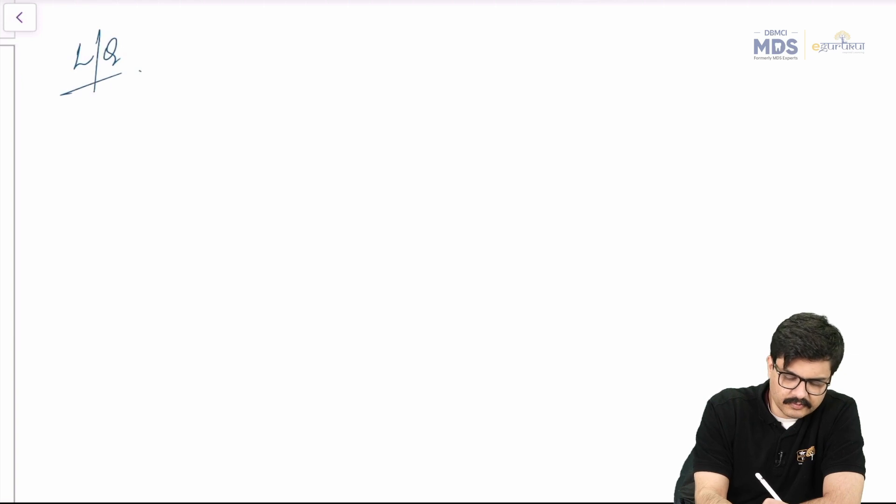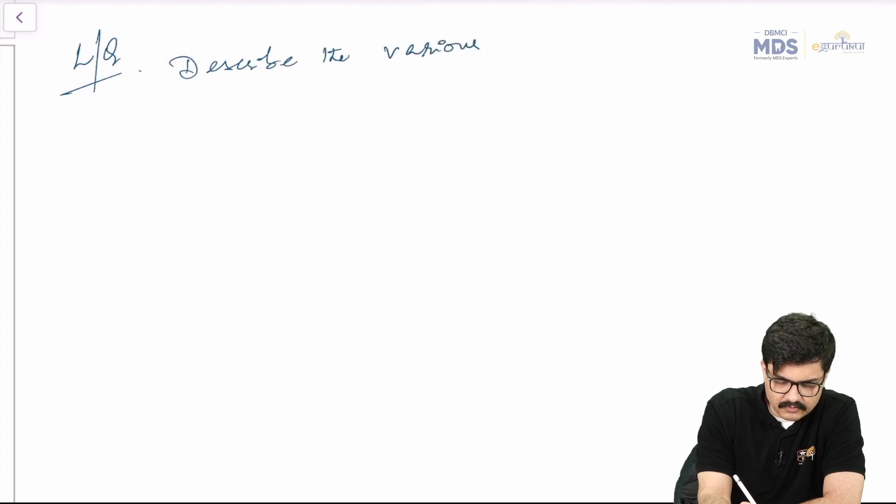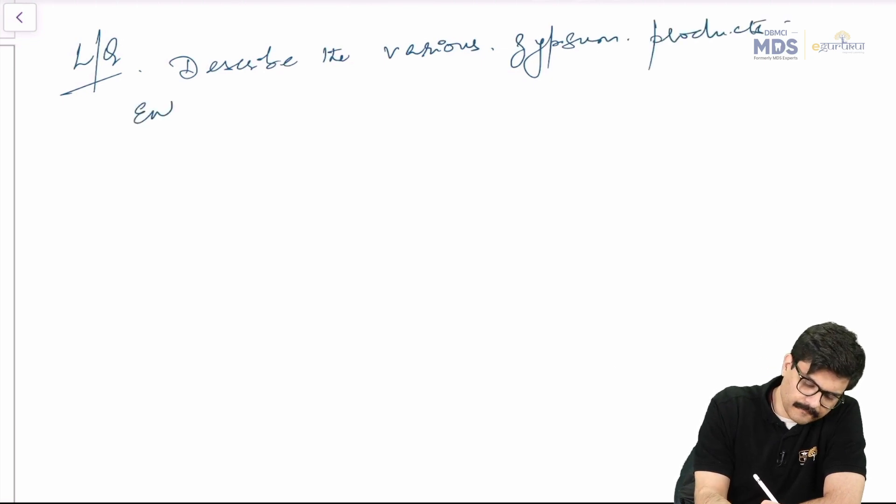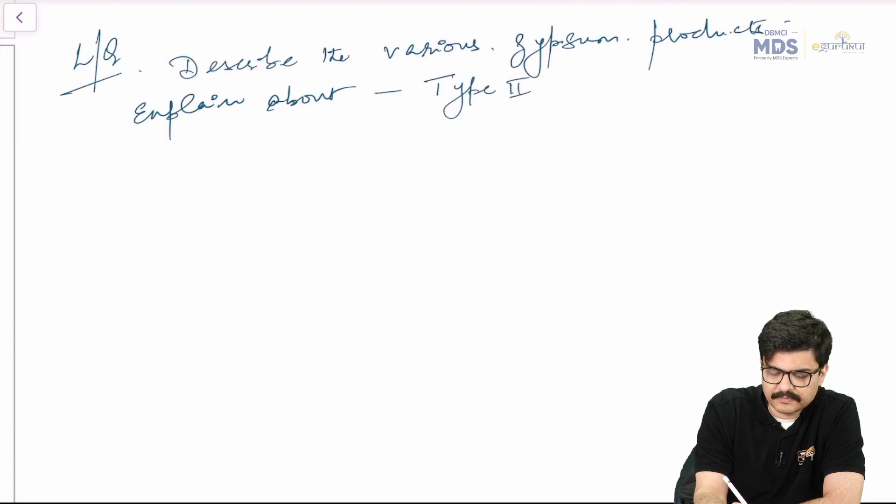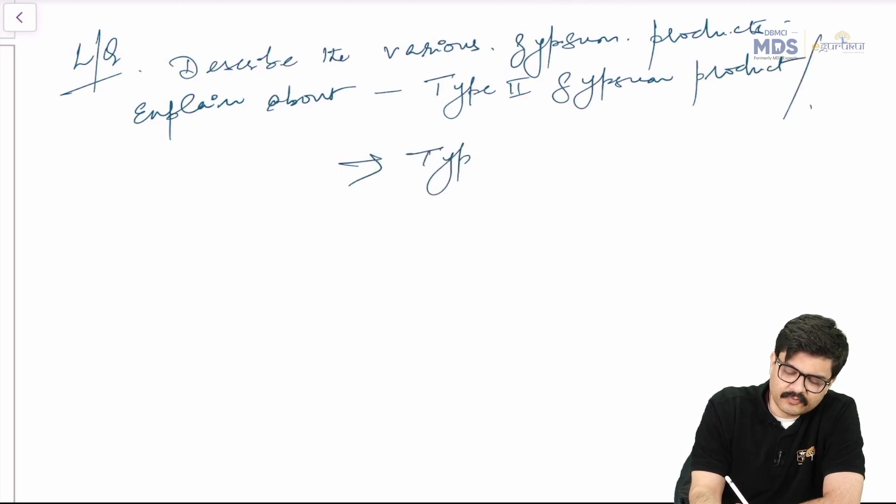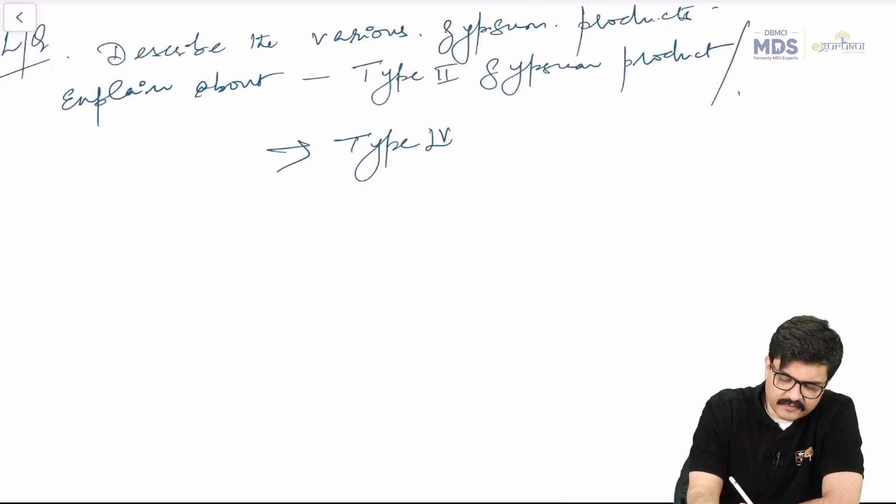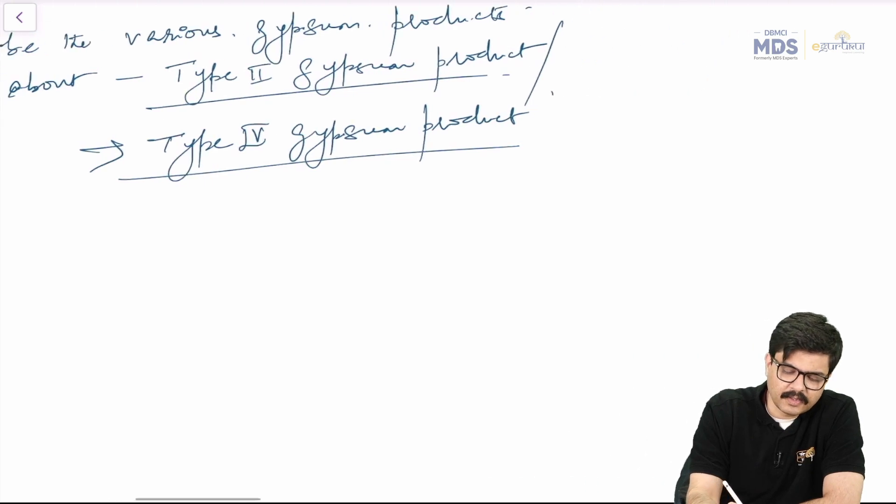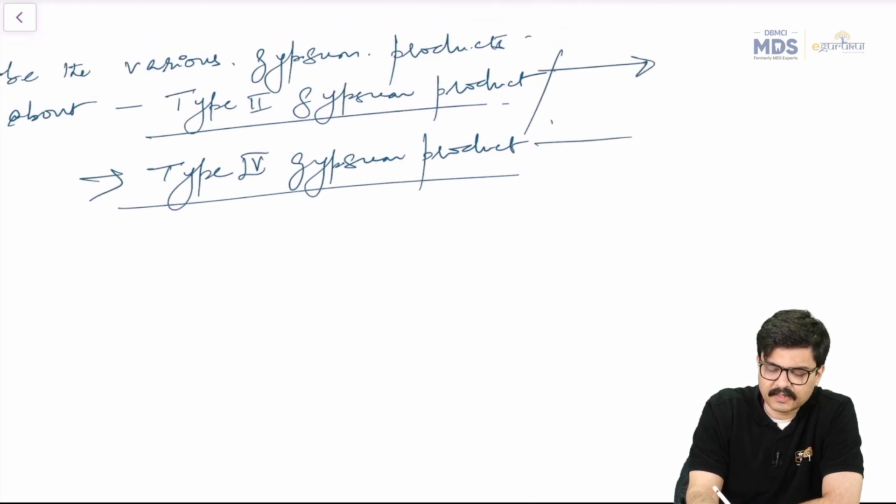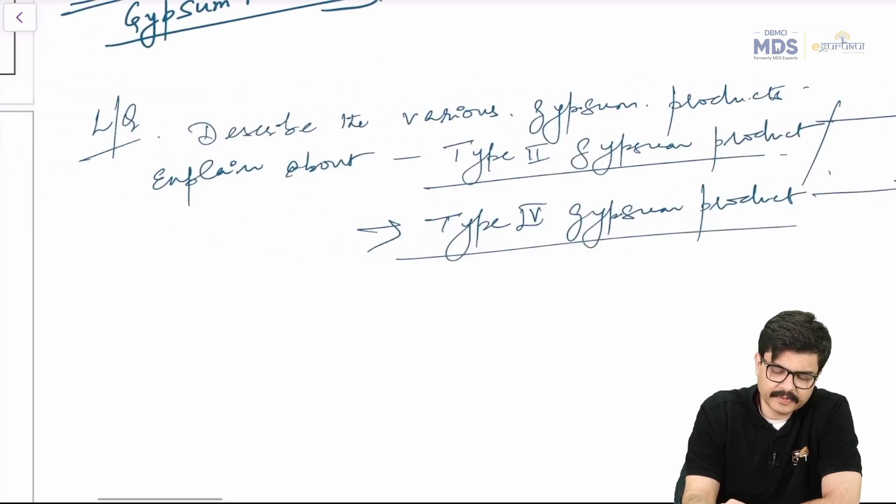So if we talk about the LQ, it would be describe the various gypsum products and explain about, say for example, type 2 gypsum product. Or for example, they can ask you type 4, anything from type 1 to 5, but what I've seen more commonly is type 4 is pretty common, type 2 is pretty commonly asked, and you should of course be ready with any type. And as I said, these specific types can come as separate short notes or short essays. That's how the examiner usually makes these questions.